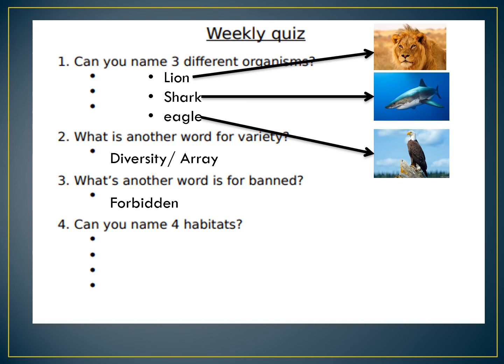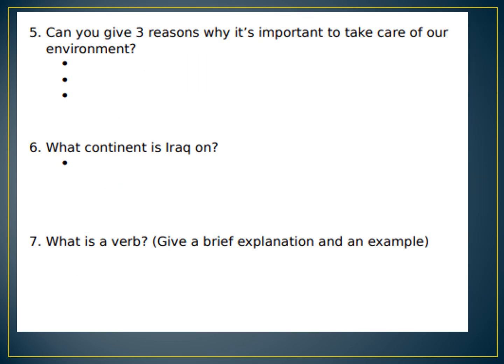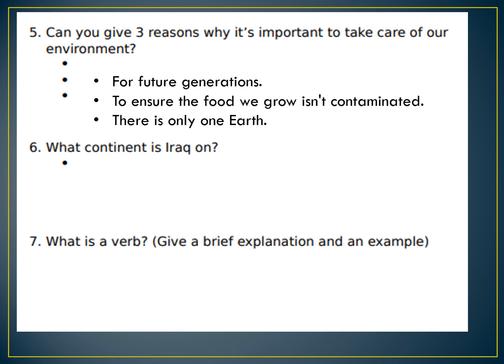What is another word for banned? Forbidden — you could also have said prohibited. Can you name four habitats? Ocean, forest, sand, and wetland — there were a few others you could have chosen. Can you give three reasons why it's important to take care of our environment? For future generations; to ensure the food we grow isn't contaminated; and there is only one earth — no other planet we have found yet is suitable for life, so if we destroy earth there's nowhere else to go.